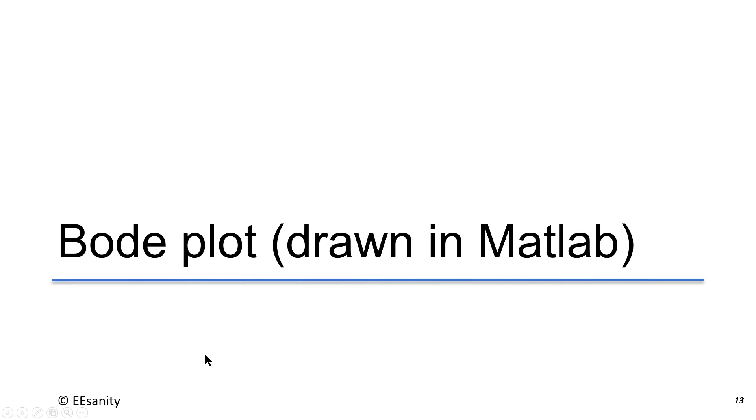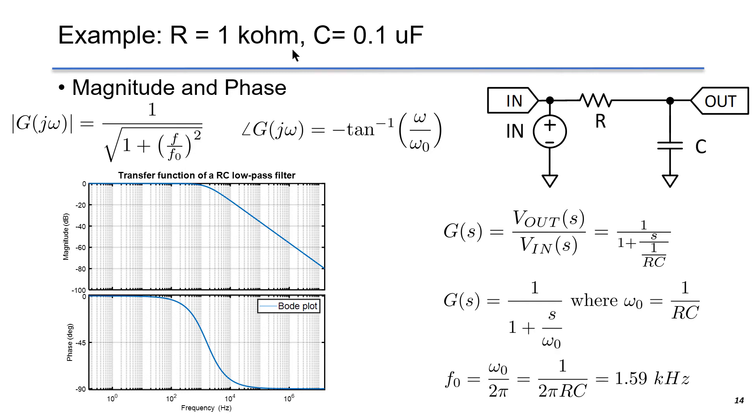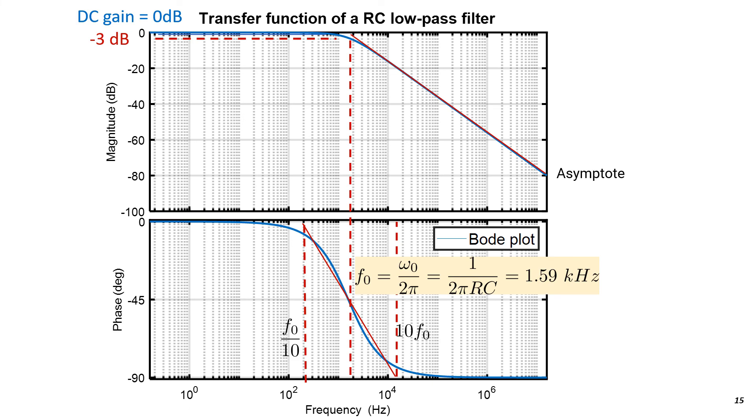The Bode plot drawn in MATLAB. In this particular example, R equals 1 kilo ohm and C equals 0.1 microfarad. If we use MATLAB, we can plot the Bode plot for this transfer function. The pole, or we call it corner frequency F_0, is 1.59 kHz. At 1.59 kHz, you can see the magnitude is around minus 3 dB, and the magnitude is reduced gradually at a certain slope, which is minus 20 dB per decade. At corner frequency, the phase will be minus 45 degrees.